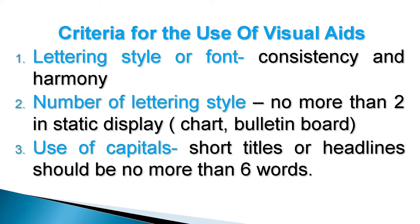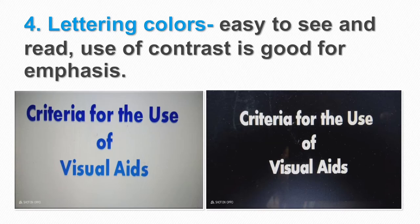The first criterion for the use of visual aids is lettering style or font — consistency and harmony. Keep the style consistent: same font, colors, positions, and font size. Number 2: limit to no more than 2 lettering styles in a static display. Number 3: use of capitals — short titles or headlines should be no more than 6 words. Number 4: lettering colors must be easy to see and read; use contrast for emphasis — dark color on white background, and light color on dark background.